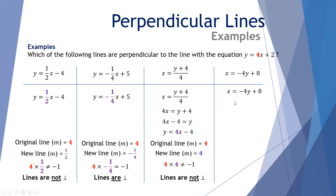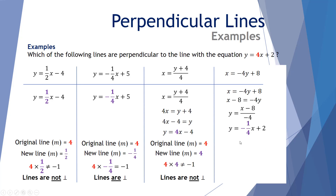Final example: x equals negative 4y plus 8. Subtract 8 from both sides to get x take 8 equals negative 4y. Divide both sides by negative 4 to get y equals x take 8 over negative 4. Separating factors: x divided by negative 4 gives negative a quarter x, and negative 8 divided by negative 4 gives plus 2. So y equals negative a quarter x plus 2. The original has gradient 4; multiplying 4 by negative a quarter gives negative 1 — these lines are perpendicular.